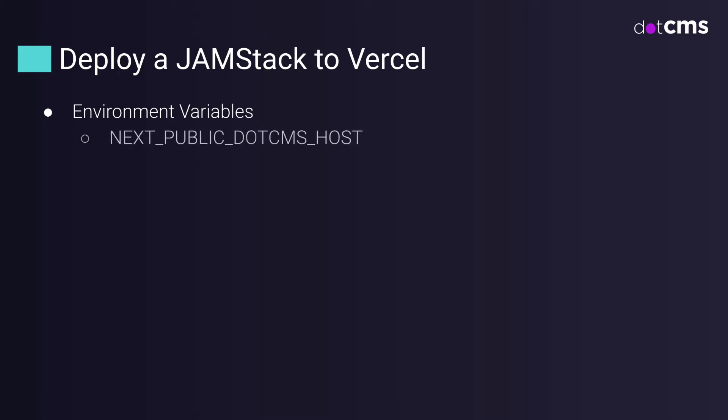The first environment variable we need is NextPublic.CMS host. This is the .CMS instance where your data is hosted and is used to make requests to our GraphQL server. It has a NextPublic prefix because this is how Next.js exposes variables to the browser — without this prefix, the variable will only be available in the Node process. The second is Deploy URL, which is required for .CMS edit mode anywhere and will be used in our custom server. Freddy will explain later why it's needed. Lastly, our bearer token, which is an access token exposed by .CMS API to make authenticated requests to our API.